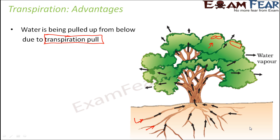It needs a lot of force to move something against gravity — when you throw an apple up, it falls back down. To move water upward, extra force is needed. That extra force is created by transpiration pull. Because of transpiration, water is always being pulled upward, and as a result the roots also draw water in from the soil. That is the most important advantage of transpiration.